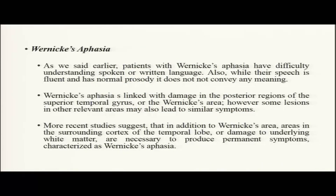Patients with Wernicke's aphasia have difficulty understanding spoken or written language. While their speech may be fluent and prosody normal, it is essentially meaningless. Wernicke's aphasia has been linked to damage mainly in the posterior regions of the superior temporal gyrus, though lesions near the STS and other areas can also lead to similar symptoms. More recent studies suggest that damage to the underlying white matter is also necessary to produce permanent Wernicke's aphasia-like symptoms — small damage to the Wernicke's area alone may not be sufficient.